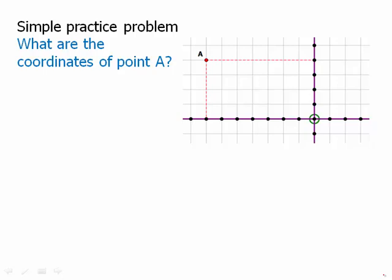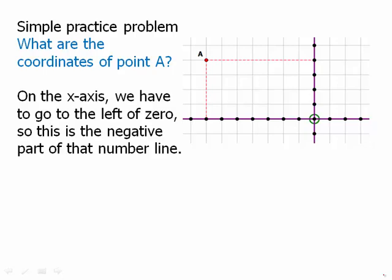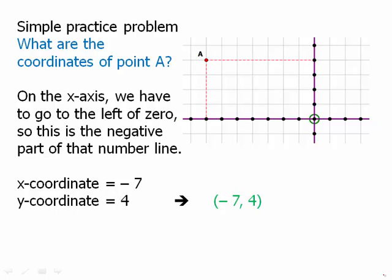Here's a simple practice problem. We want to know what are the coordinates of this point. Notice that we're to the left of the y-axis, so we're on the left side of the xy plane where the horizontal number line is negative. Because we're to the left of zero, we're in the negative part of the x-axis. Counting left: one, two, three, four, five, six, seven. Then counting up: one, two, three, four. So the x coordinate is negative seven, the y coordinate is positive four. The coordinates of that point are (−7, 4) — the unique ordered pair giving its exact location.